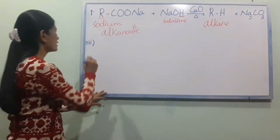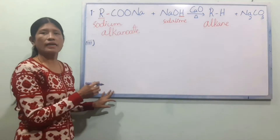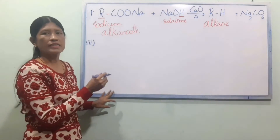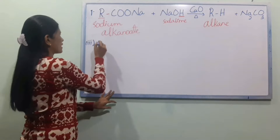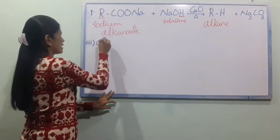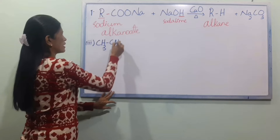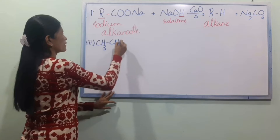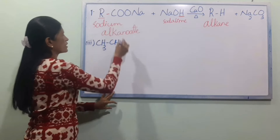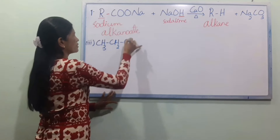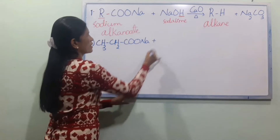Let's take a look at CH3CH2 as an example. The reaction is: CH3CH2COO-Na plus NaOH and CaO reacted together.